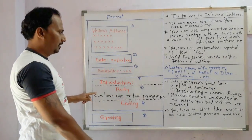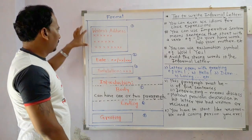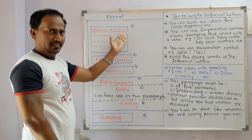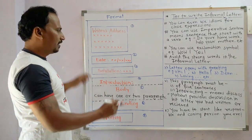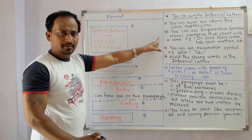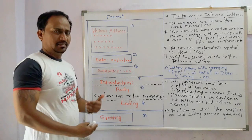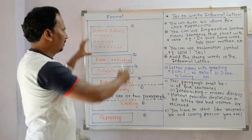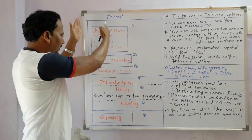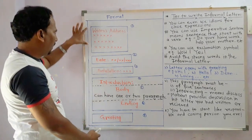Now we shall see the format. This is the standard format. Suppose this is your page. First of all, we have to write the writer's address here. The address can be written in the right corner of the page — that format can also be used — but the better, standard way is to write the writer's address on the left margin. All these texts should be in the left margin, like this.